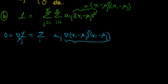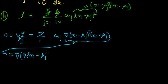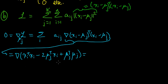Expanding the squared distance: the gradient of (x_i^T x_i − 2μ_j^T x_i + μ_j^T μ_j). The first term doesn't depend on μ_j so its gradient is zero. Using standard vector calculus rules, the gradient of −2μ_j^T x_i is −2x_i, and the gradient of μ_j^T μ_j is 2μ_j. We can verify these rules from the definition of the gradient if needed.